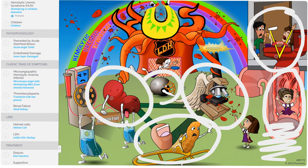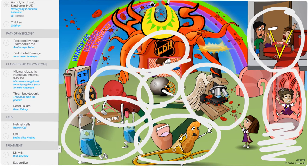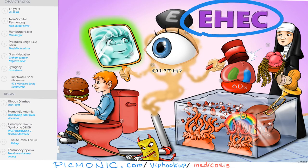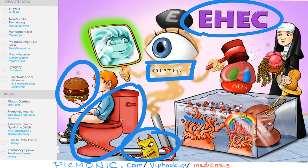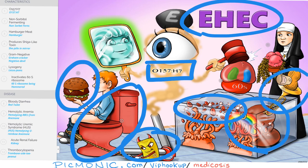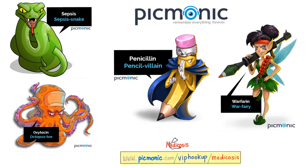On lab: you see the helmet cell which is the schistocyte, and LDH is high. Management: supportive care with fluids and electrolytes; if it's bad, dialysis. The E. coli O157:H7 is associated with undercooked hamburger. It's a gram-negative bacteria causing bloody diarrhea. Hemolytic uremic syndrome — the famous triad: hemolysis, renal failure, and thrombocytopenia. Try to look at these Picmonic visuals and you will remember them. You can go to picmonic.com/viphookup/medicosis and try them for free.